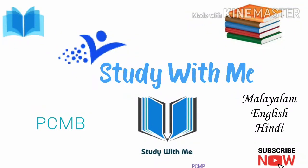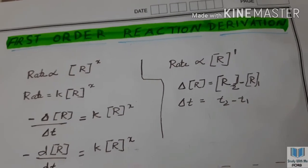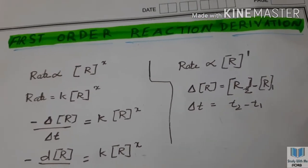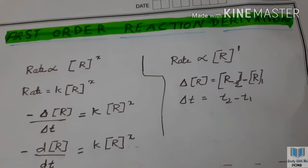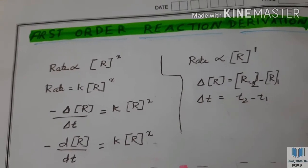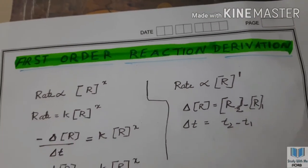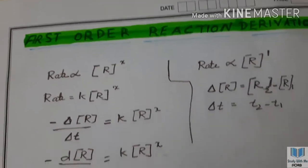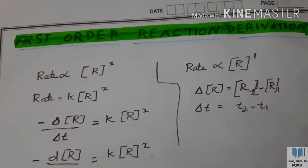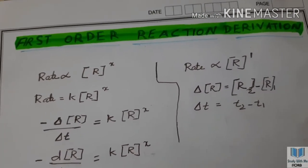Welcome to my channel, Study with Me PCMB. This is the first-order reaction. Class 12 chemistry, unit 4, chemical kinetics, and this is a very important first-order reaction.